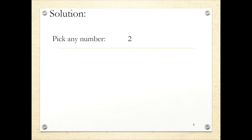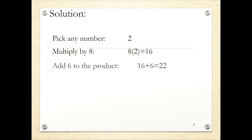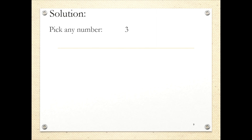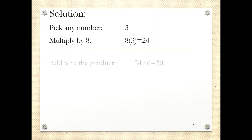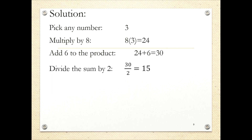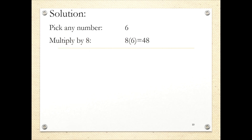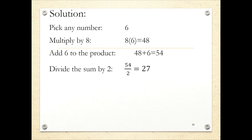For the first number, I picked 2. Multiply by 8: 16 plus 6 is 22, divided by 2 is 11, subtract 3, and we have 8. Next, pick 3: times 8 is 24, plus 6 is 30, divide by 2 is 15, minus 3 is 12. Last, pick 6: multiply by 8 gives 48, plus 6 is 54, divide by 2 is 27, minus 3 is 24.